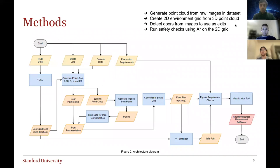For our methods, we first start with our raw images from the dataset, and we generate a 3D point cloud by inverting the perspective projection. Because we know the depth data, and we know the camera's intrinsic and extrinsic parameters.